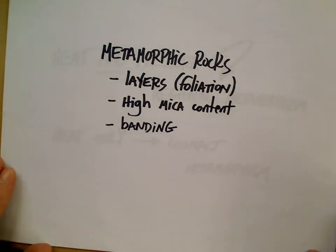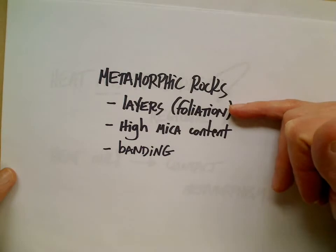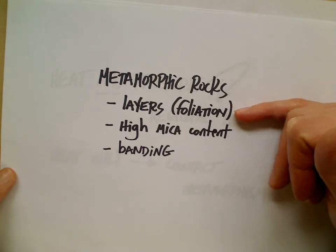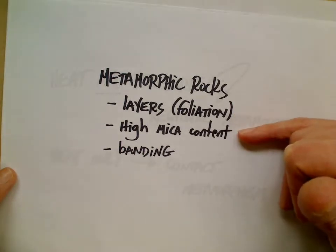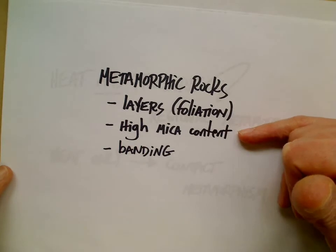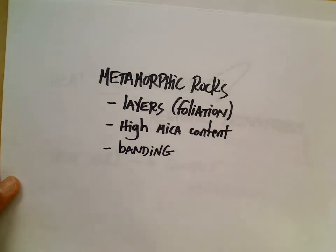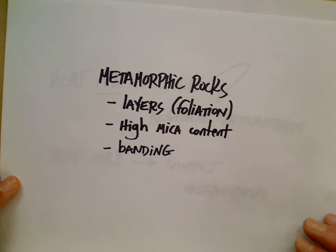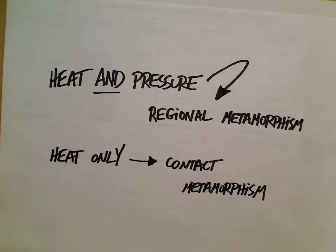You're going to recognize metamorphic rocks in a few ways. If they have layers, we're going to call it foliation — the thin layers that come from a lot of pressure. High mica content — be careful with this. Some students see any mica at all and call it metamorphic. That's not true; it has to be high mica content. Or banding, which is a striping appearance of minerals.